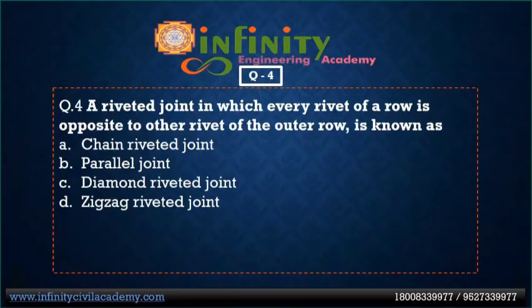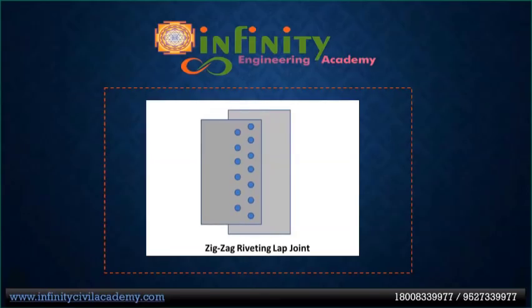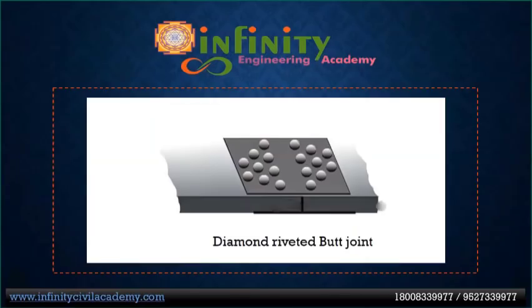Question 4: A riveted joint in which every rivet of a row is opposite to the other rivet of the outer row is known as — option A: chain riveted joint, option B: parallel riveted joint, option C: diamond riveted joint, option D: zigzag riveted joint. Option A is correct — chain riveted joint. In chain riveting, rows lie exactly opposite each other in a straight line. In zigzag riveting, rows are staggered. In diamond riveting, rivets are arranged in rows bordered at ends and tapered at the opposite side.